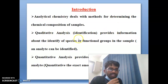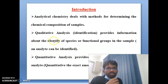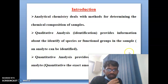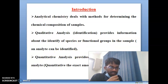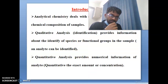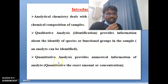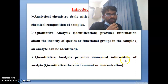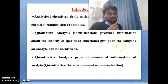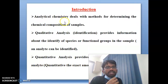Qualitative analysis provides information about the identity of species or the functional groups of samples — analytes can be identified. Quantitative analysis provides numerical information about the analyte, meaning the exact amount or concentration can be found out from analytical chemistry.